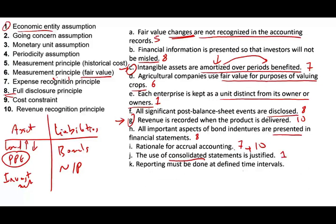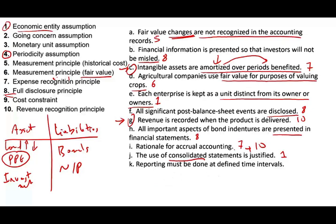Reporting must be done at a defined time interval — meaning you have to report quarterly or annually. For publicly traded companies, there are four quarters with the last being the annual report. This is based on the periodicity principle or periodicity assumption: the life of the company has to be broken down into artificial periods. The period could be quarterly, monthly, or semi-annually. Quarterly reporting is mandatory for publicly traded companies.